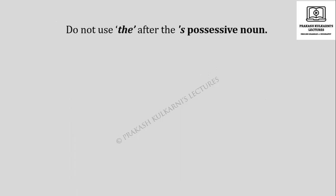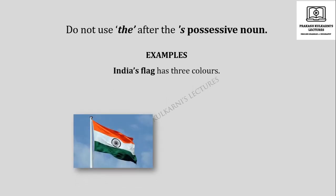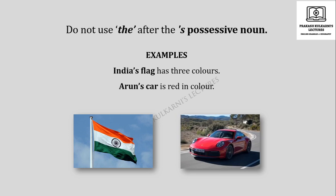Do not use THE after a possessive apostrophe-S noun. For example, 'India's flag has three colors.' India's flag — after India's, the noun flag follows, so we should not say India's A flag or India's THE flag, only India's flag. 'Arun's car is red in color' — it is a possessive noun, so not Arun's A car or THE car, just Arun's car.